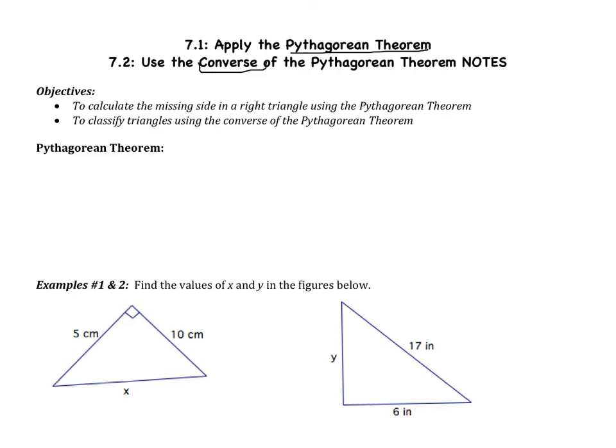Two objectives for this video. First, we are going to calculate the missing sides in a right triangle using the Pythagorean Theorem. And then we are also going to classify triangles using the converse of the Pythagorean Theorem. So we should probably start with: what is the Pythagorean Theorem?